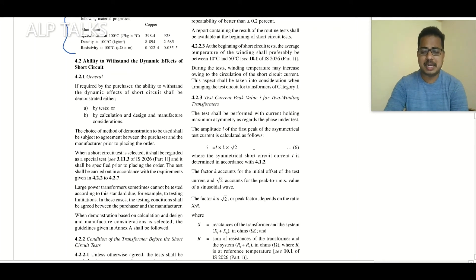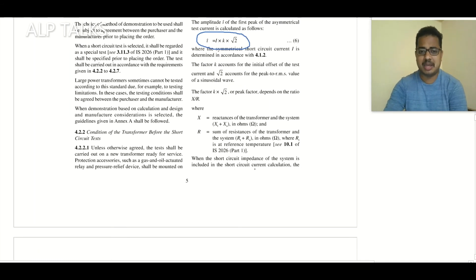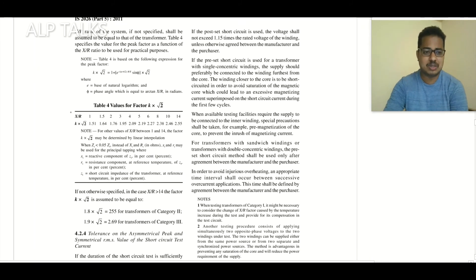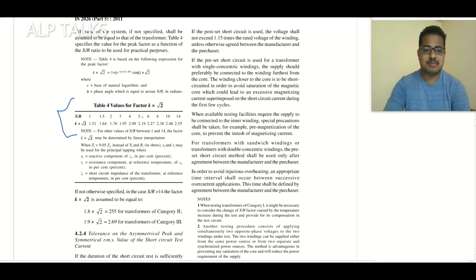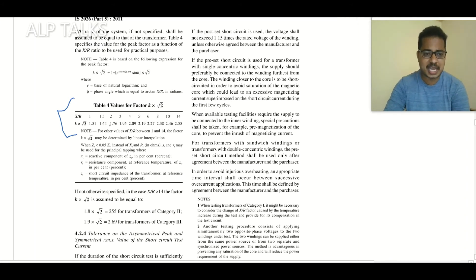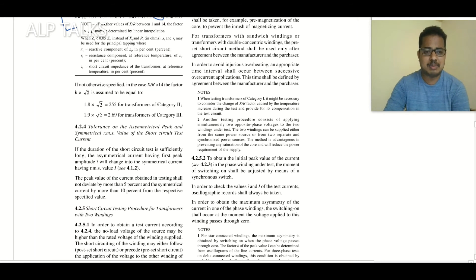For the asymmetrical current component, you can calculate it by multiplying with k√2. A table is provided — for example, if X/R is 8, multiply the symmetrical value by 2.38 using interpolation. For Category 2 the default is 1.8 × √2, and for Category 3 it is 1.9 × √2; for the lower range you can use the full table.